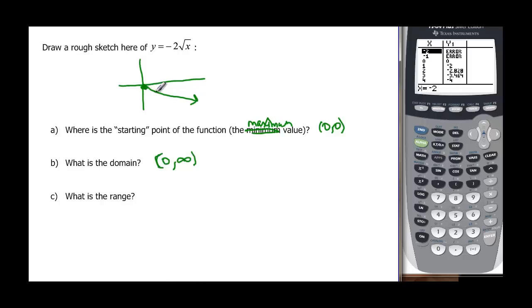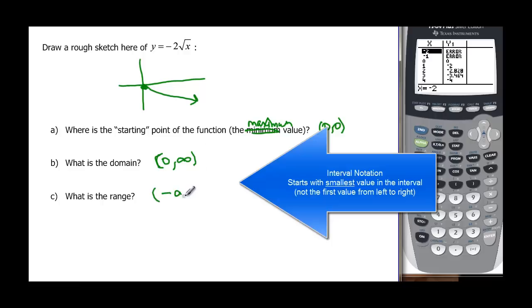The range starts at 0 but goes down from there, so we start at negative infinity. That's how low we go, all the way up to and including 0 but no farther.